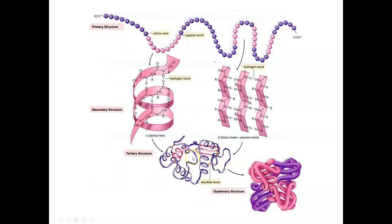As these secondary structures form, the protein takes on a tertiary or three-dimensional structure, with disulfide bonds and hydrogen bonds forming. Every protein has a tertiary structure, and that three-dimensional structure is what gives it its function. If you take several proteins and assemble them together, you get a quaternary structure — an example is heme with two alpha and two beta globin chains.